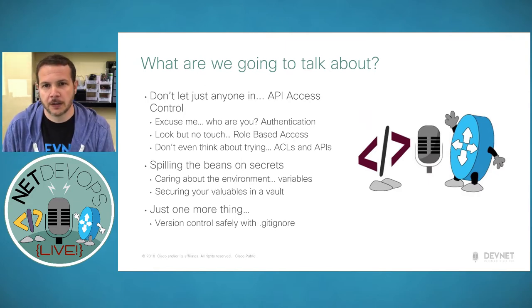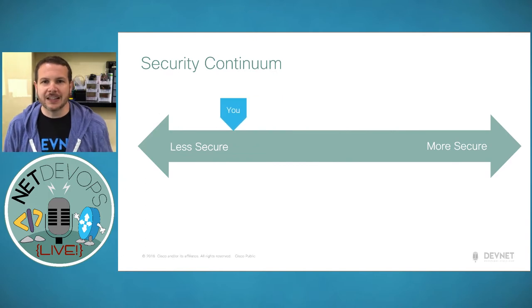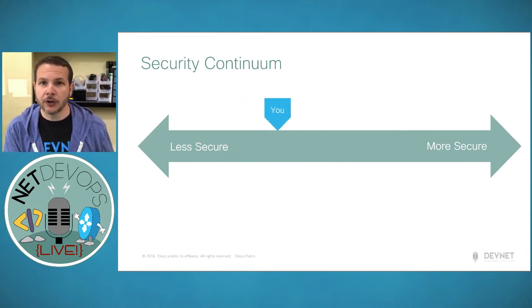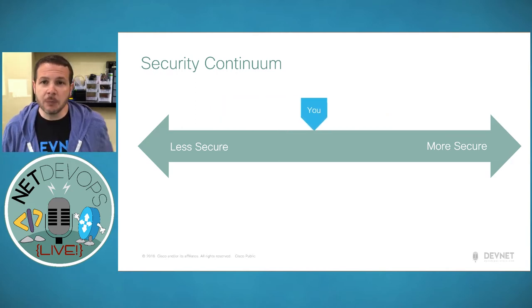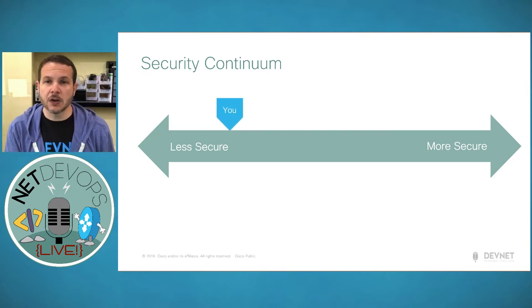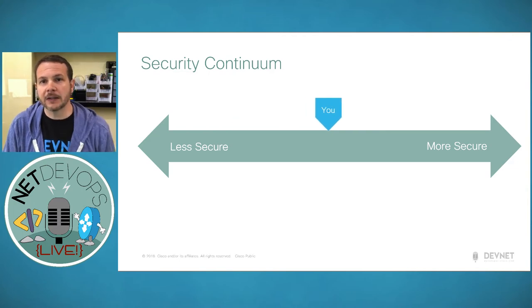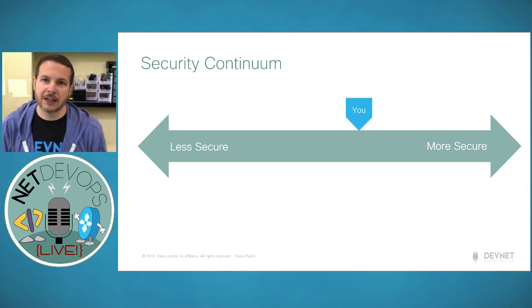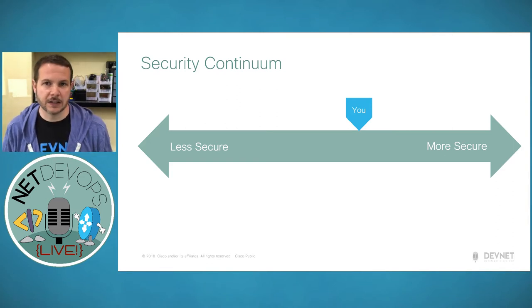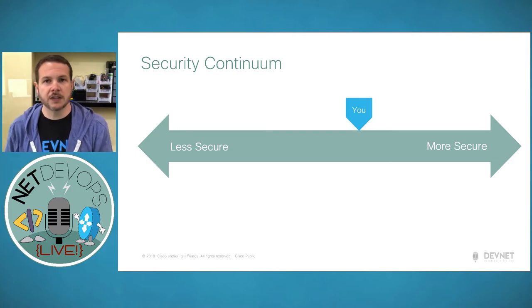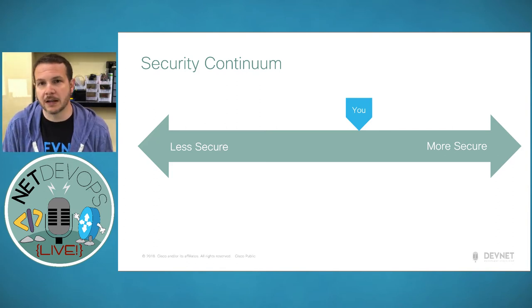At the end we'll cover one more important topic — leveraging something called the gitignore file as part of your git use cases as you commit your code to source control. Security is a continuum: at one end we have less secure deployments, and at the other end we have more secure. At any point in time your strategies are somewhere on this continuum, and through today's session we'll look at different options that will move you along that continuum.